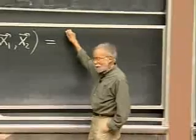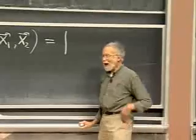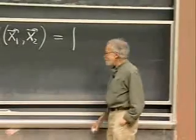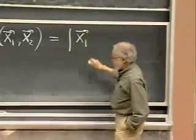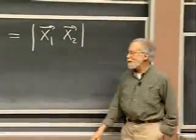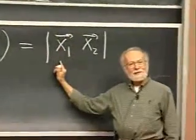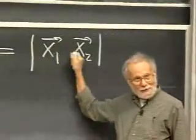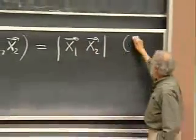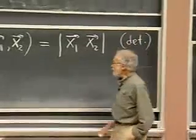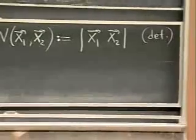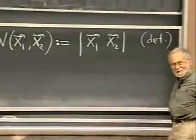x1 is a column vector, x2 is a column vector, with two entries each. Together they make a square matrix, and the Wronskian is the determinant of that matrix. I will put a colon there to indicate it is a definition. There is a connection between this and the earlier Wronskian, which I unfortunately can't explain to you because you are going to explain it to me — I gave it to you as a homework problem.